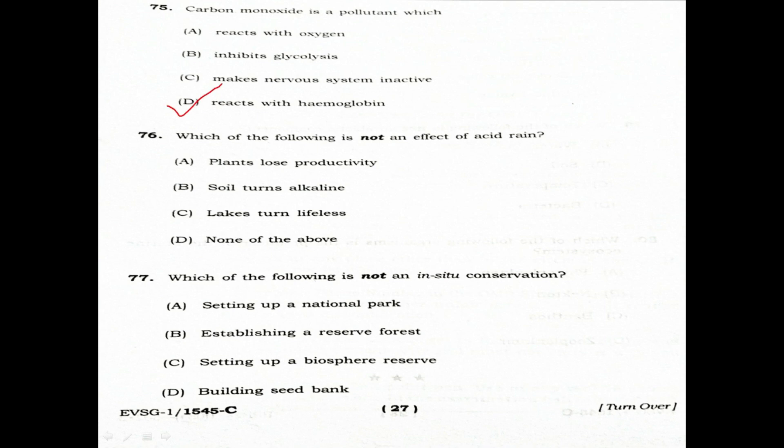Which of the following is not an effect of acid rain? Option A: Plants lose productivity. Option B: Soil turns alkaline. Option C: Lakes turn lifeless. Option D: None of the above.